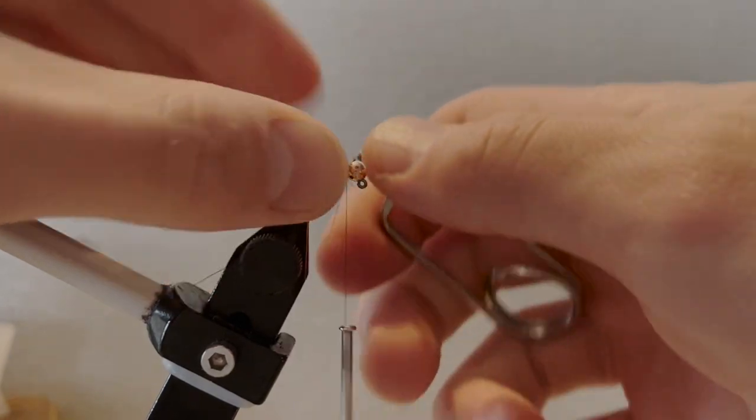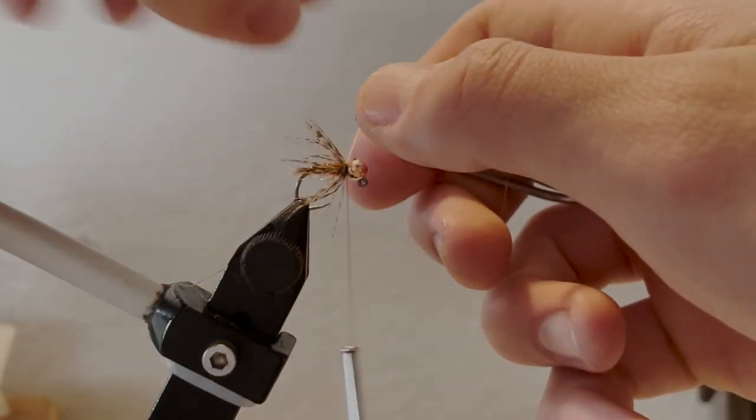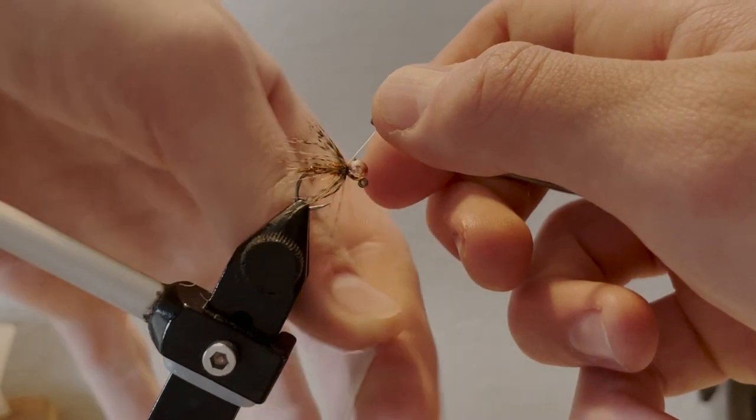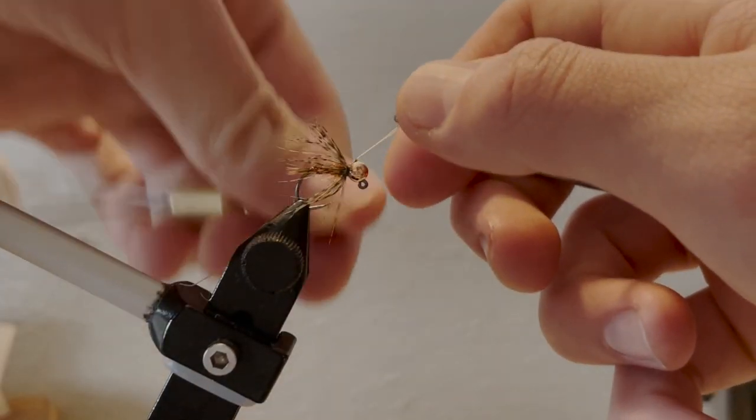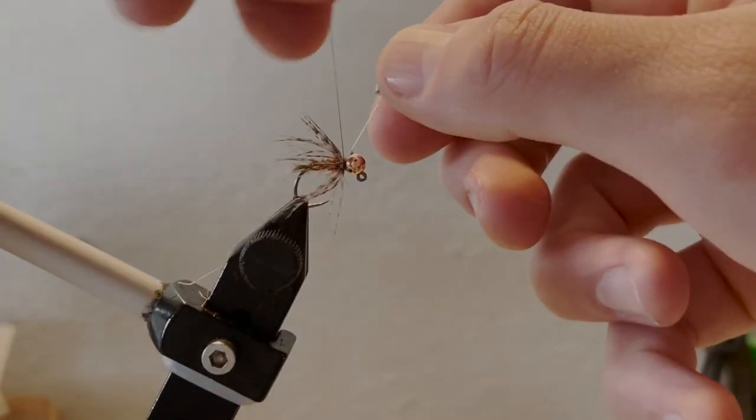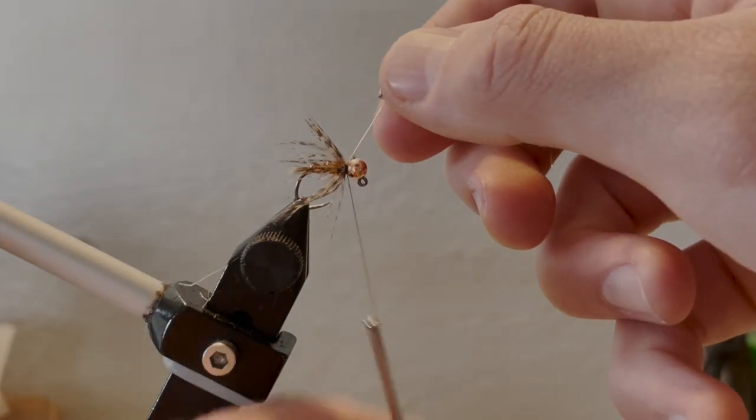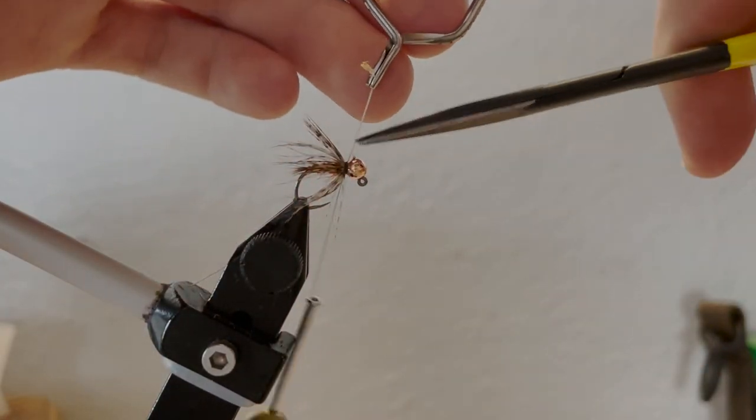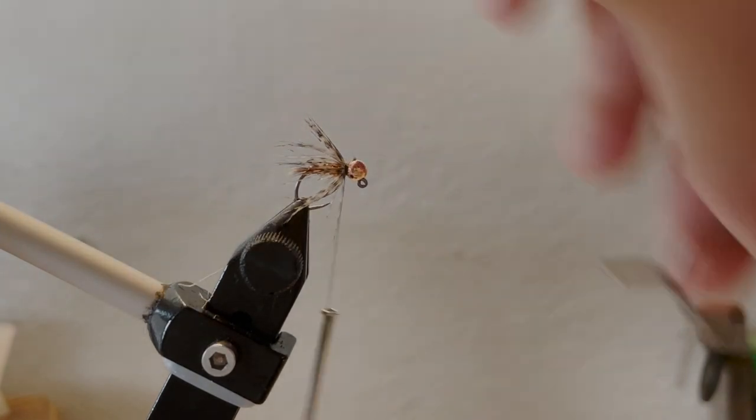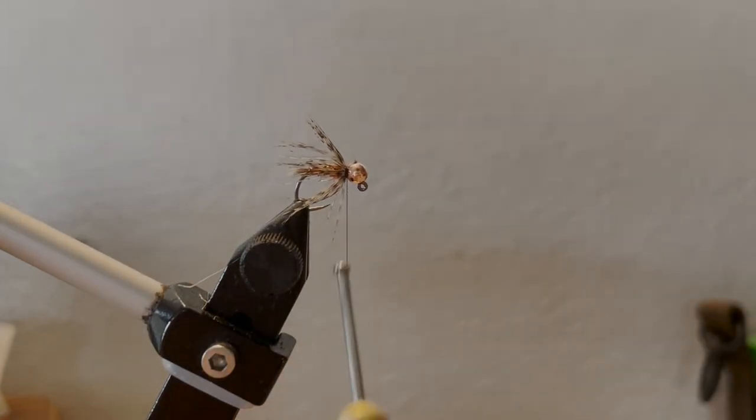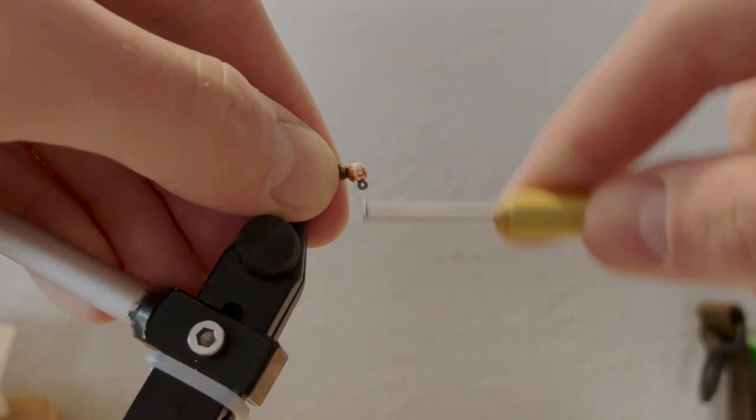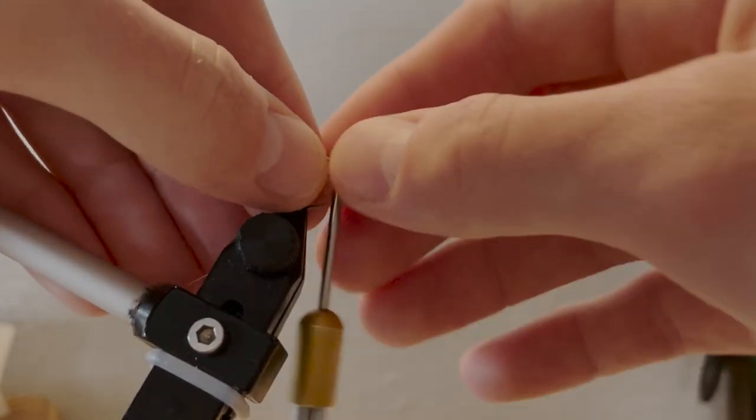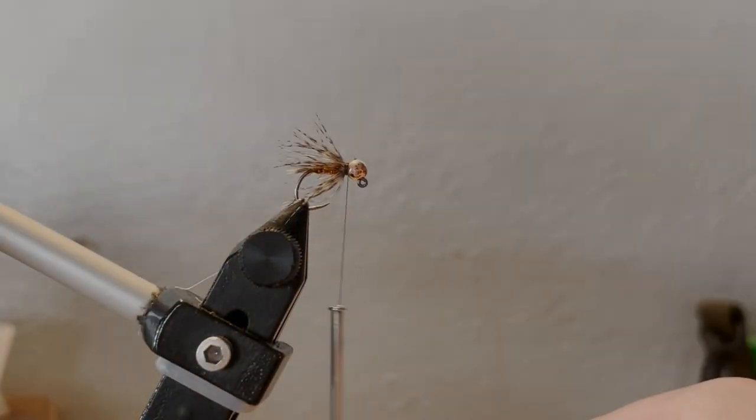Once you've completed that, take your thread and secure it by the stem. Make sure you really secure it—three to four, five securing wraps. Snip it off and come back in with a couple tighter securing wraps, just like that.